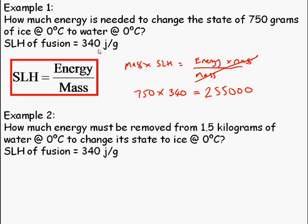Substitute the numbers in. Because this is 340 joules per gram and this is in grams, we don't need to change any of the units. We get a number here which I can put as kilojoules instead of joules there. 255 kilojoules.